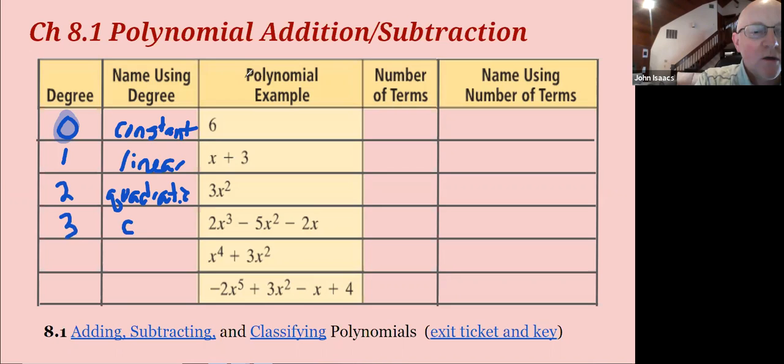Two degree. Quadratic. Three degree. Cubic. Now notice that I am not adding the degrees. I'm not saying three plus two plus one. I'm getting the sixth degree. I'm just taking the leading coefficient degree in order to name the polynomial.